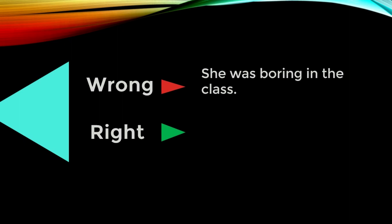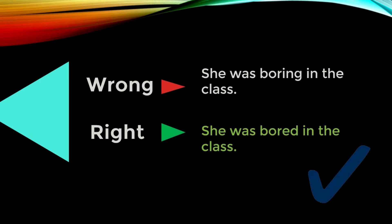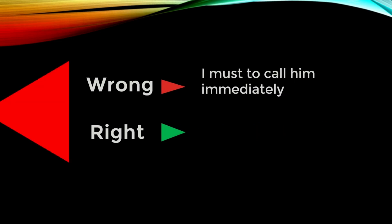Next: 'She was boring in the class.' When you are using 'was,' that means we are talking about the past tense, so we shouldn't be using the -ing continuous form. Instead we will use: 'She was bored in the class.'